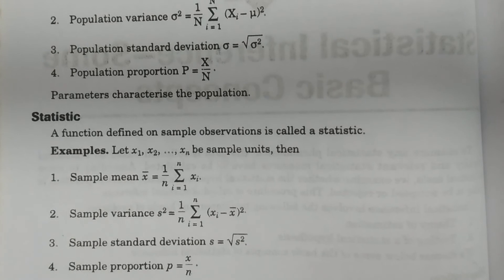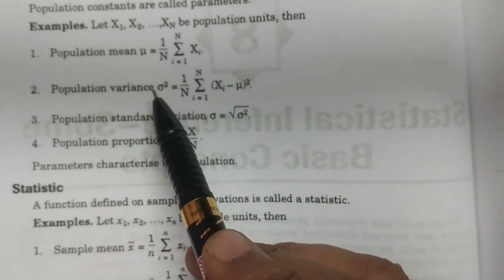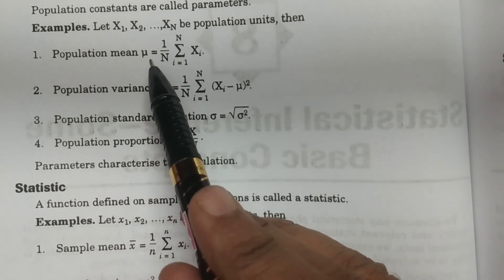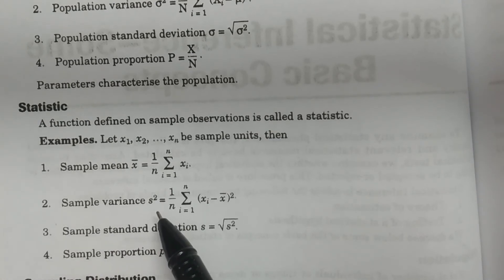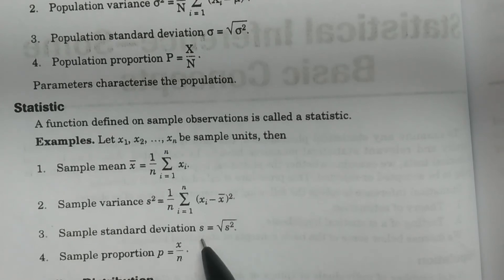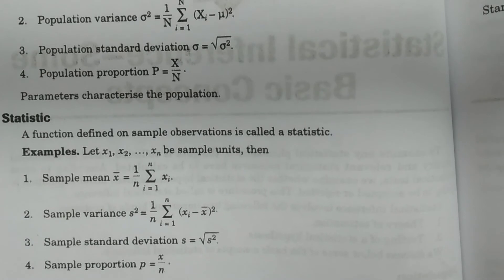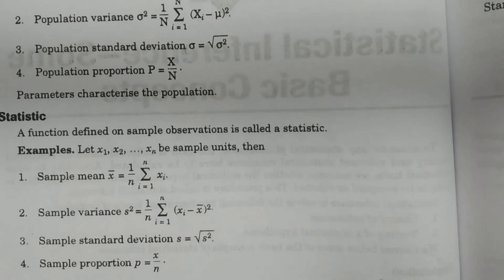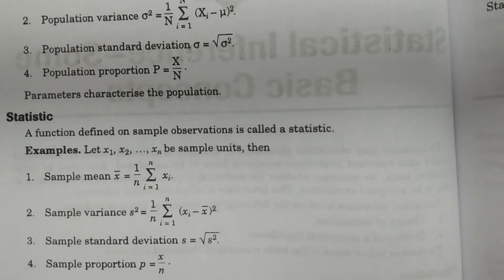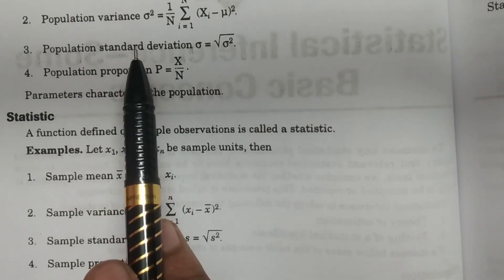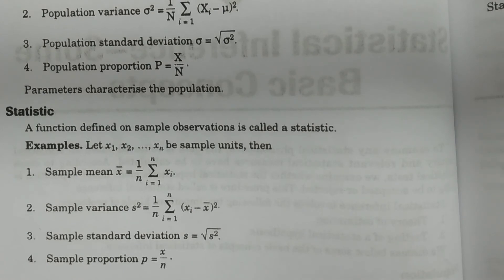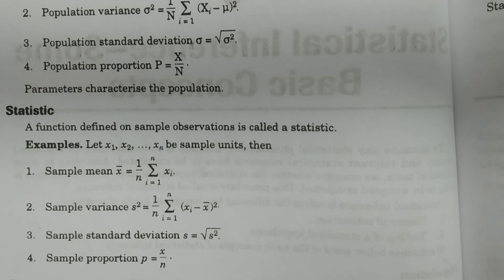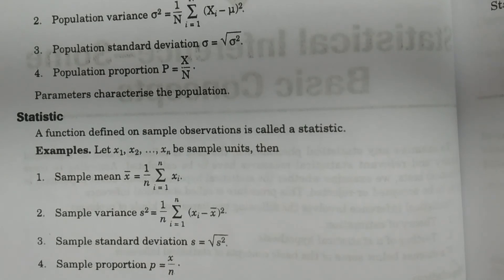Have you understood? I have distinguished between population constants and population parameters, and statistics. Population parameter mean is mu, and sample mean is denoted by x̄. Population variance is sigma square, sample variance is s square. Population standard deviation is sigma, sample standard deviation is s. Population proportion is capital P, sample proportion is small p. The difference is: parameter is related with the population constants and population values, while statistic is related with the sample observations. Statistic is a singular value — it is a function of sample observations. These are the definitions of parameter and statistic.